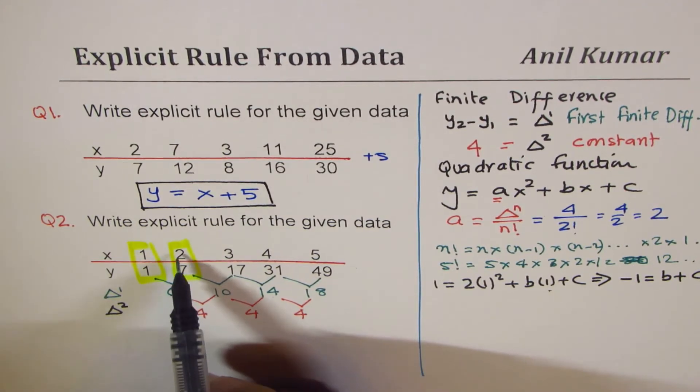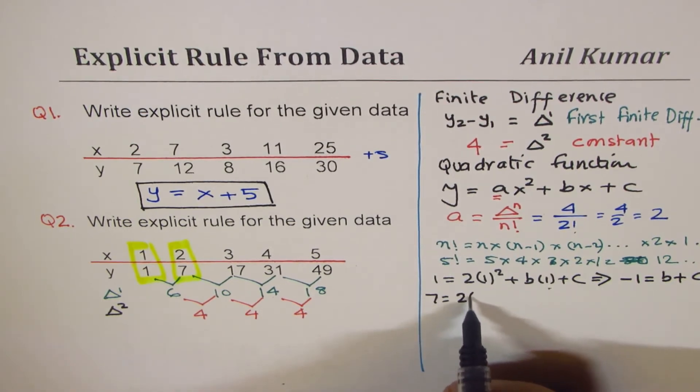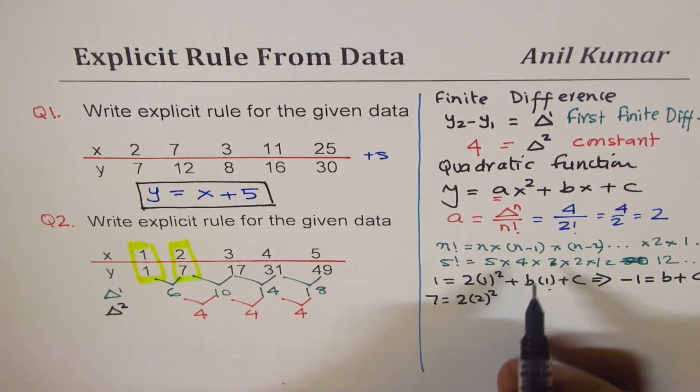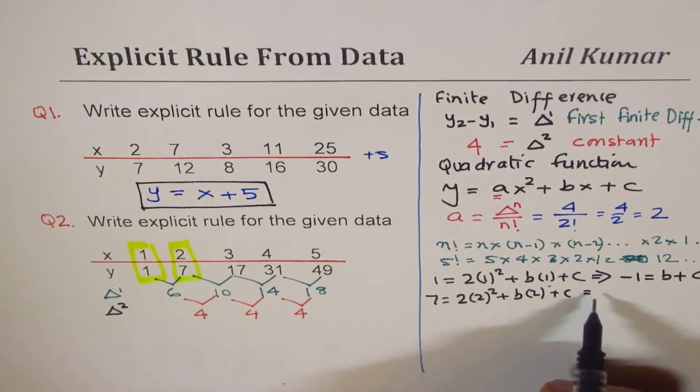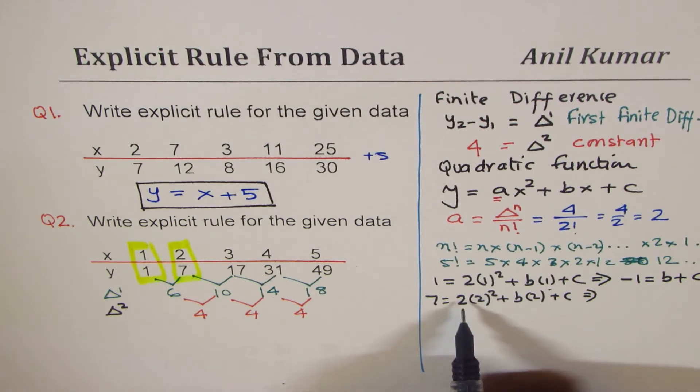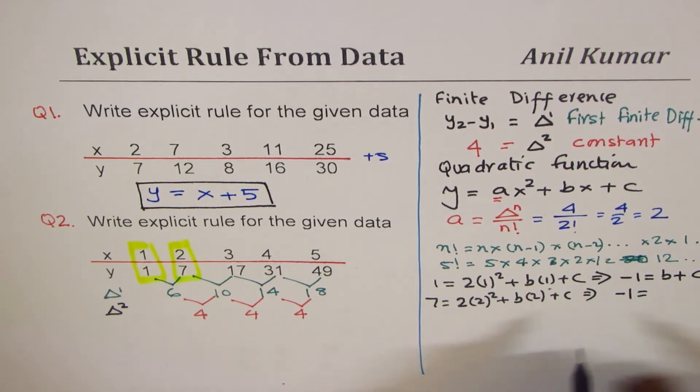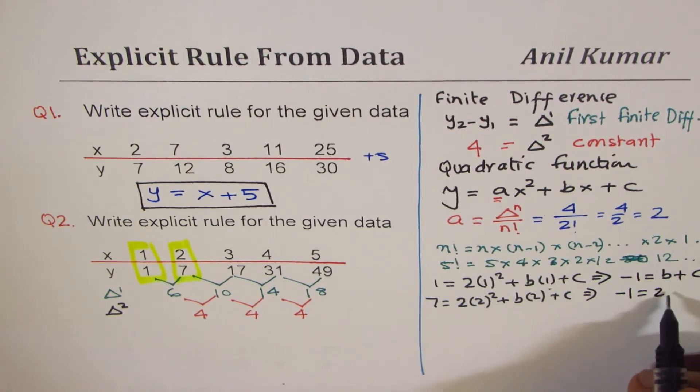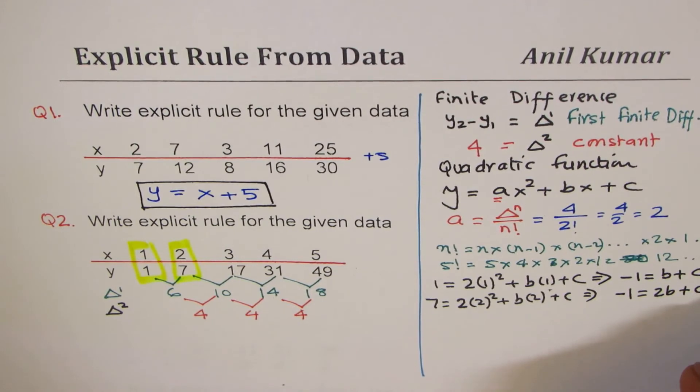Now let me use the second point, which is 2, 7. Y value is 7, so 7 equals 2 times 2 square plus b times 2 plus c. That gives me the equation: 2 square is 4, 4 times 2 is 8, and 7 minus 8 is minus 1, and we have here 2b plus c. So let's call this as our equation number 2.